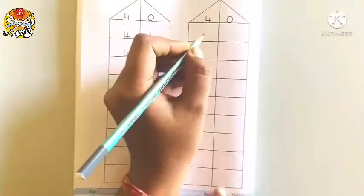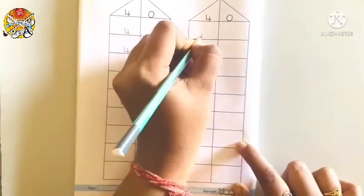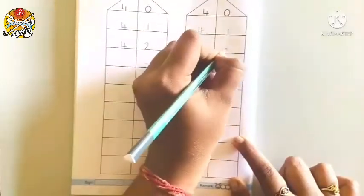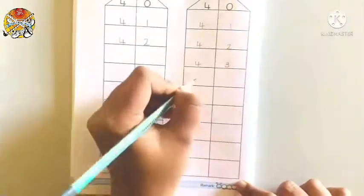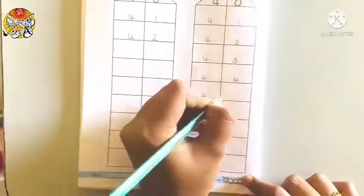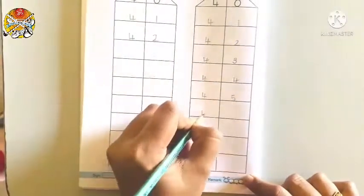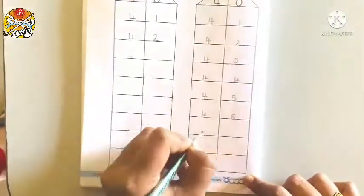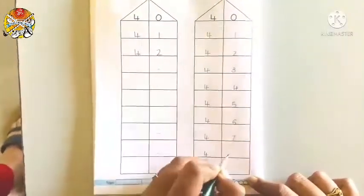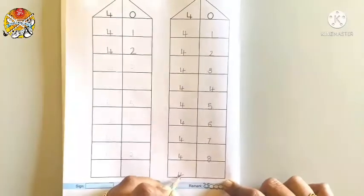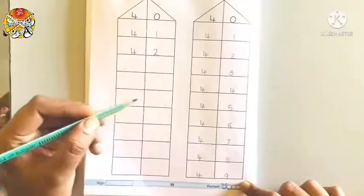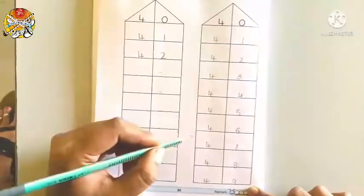And in this house you will write the numerals: 41, 42, 43, 44, 45, 46, 47, 48, 49, and then stop. I hope you all understood how to complete the house of 40's.